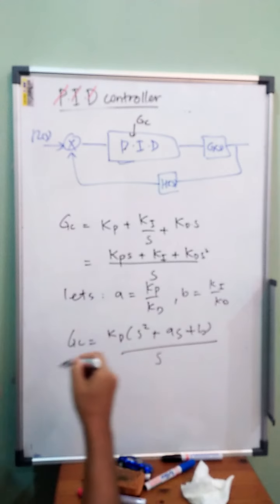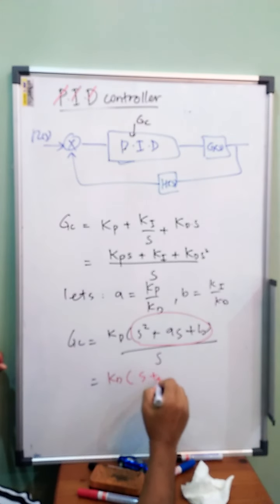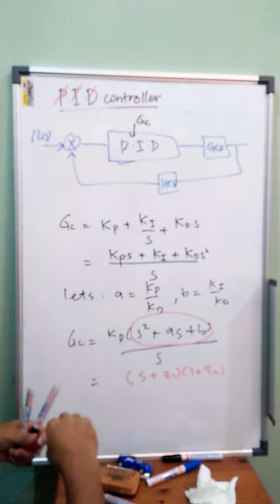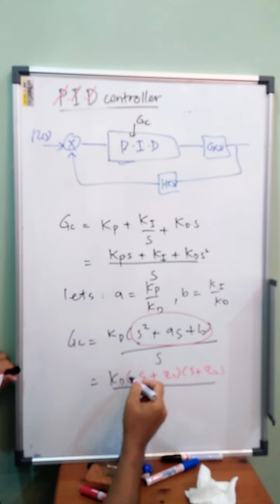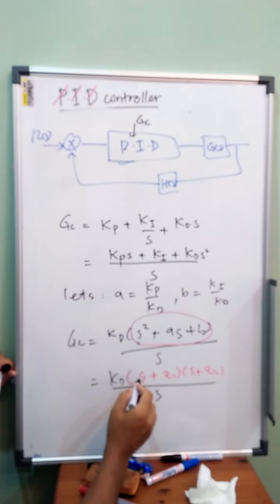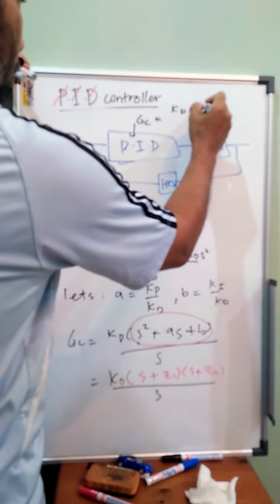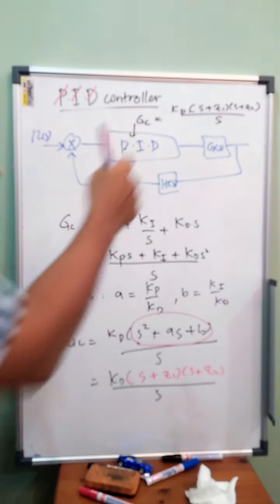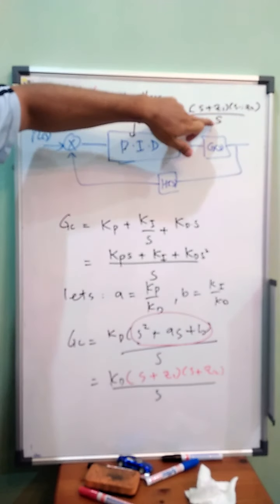Now we can solve this part. S plus Z1, S plus Z2, over s. From this part we can find root. After we find root, we have factorized and it becomes like this. We can see that there will be 2 s at numerator. So Gc will be Kd over s. When this part times this one, we will have 2 s at numerator and 1 s at denominator.